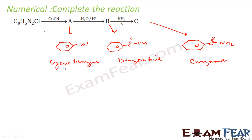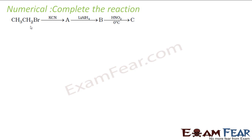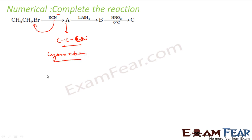So from cyanobenzene to benzoic acid to benzamide. Next, methyl bromide reacts with KCN — the same thing can happen: CN⁻ will replace Br, so what you get is CH3CN, that is cyanoethane. Now when cyanoethane reacts with LiAlH4, the double bond will break and hydrogen will be added at each position.